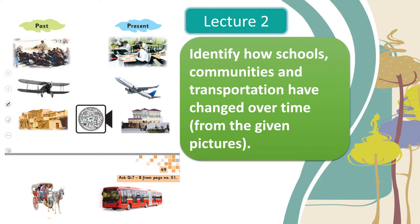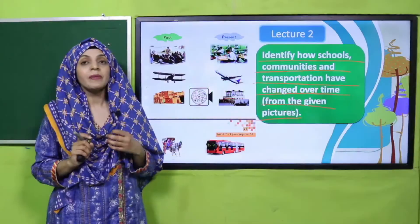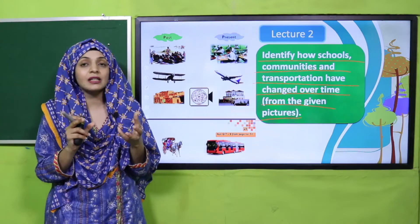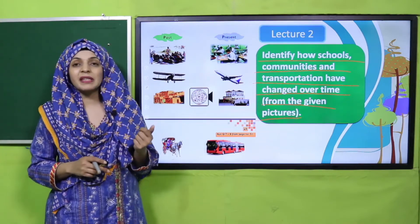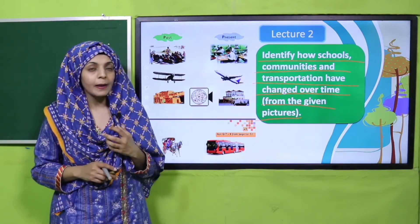Then we will move to Lecture Number Two, where students will identify how schools, communities, and transportation have changed over time using pictures. There will be a comparison of past and present through pictures — how schools used to be in the old times versus now, and how the transportation system used to work. Students will compare these things with the help of pictures. The pages under discussion will be pages 48 and 49.